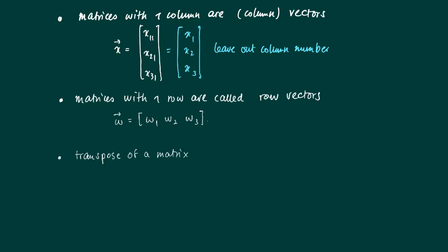The transpose of a matrix is an operation on a matrix. We may construct a matrix B out of a matrix A by swapping the rows and columns. We create a matrix B whose i,j-th element is just a_ji. So A transposed, A^T, is constructed out of A by interchanging rows and columns.